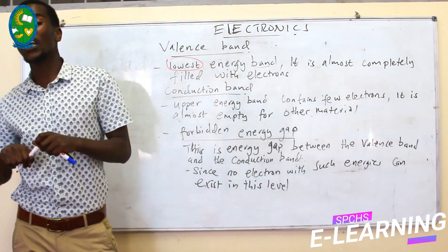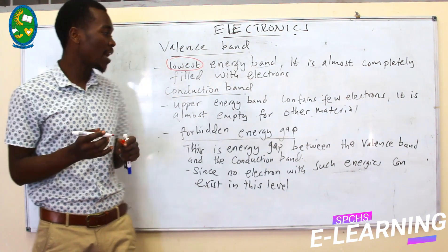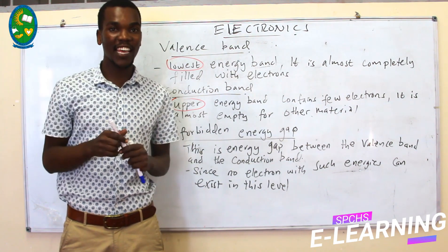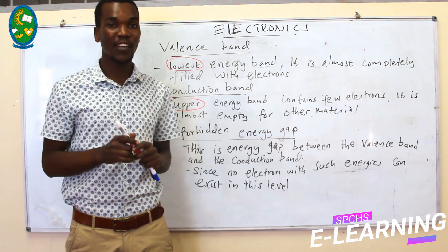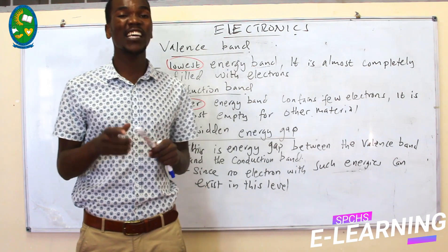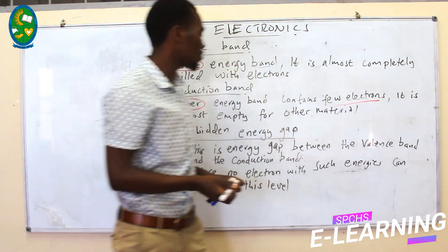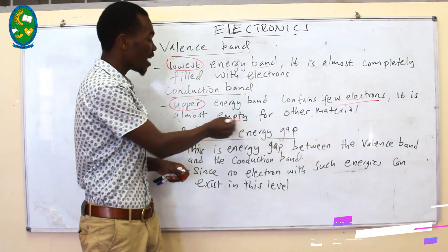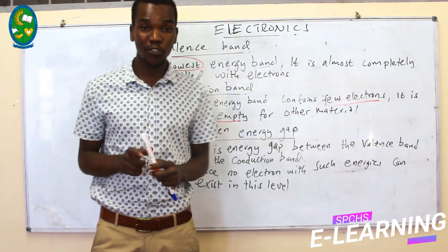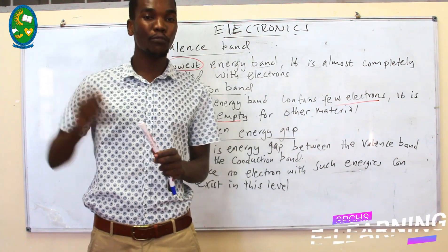The second band is the conduction band. The conduction band is the uppermost band of electrons — the upper energy band of electrons found after the energy level from the valence band. Depending on the material, it sometimes might be empty or sometimes might be filled with electrons, but it is not completely filled. It contains few electrons, and sometimes it is almost empty. For insulators, it is completely empty. This conduction band is what is responsible for the conduction of electricity. Electrons in this conduction band are free to carry charges from one point to another.